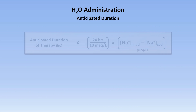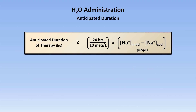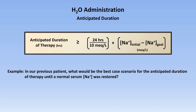Here's the calculation to estimate the anticipated duration of therapy in a best-case scenario. For this patient, if we are calling normal 145, it would be 2.4 times the difference between 170 and 145, which is 60 hours. In reality, it would usually take longer than this, since it's always better to slightly underestimate the appropriate fluid infusion rate than overestimate. It would be more typical for this patient to take 72 to 96 hours to correct.